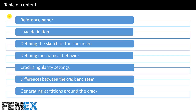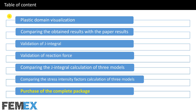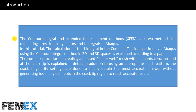This is the table of content of this tutorial. The contour integral and extended finite element methods are two methods for calculating stress intensity factors and J-integrals in Abaqus. The calculation of the J-integral in the compact tension specimen via Abaqus using the contour integral method in 2D and 3D spaces is explained according to a paper. The complex procedure of creating a focused spiderweb mesh with elements concentrated at the crack-tip is explained in detail, along with crack singularity settings to obtain accurate results.